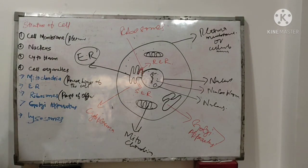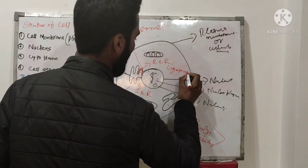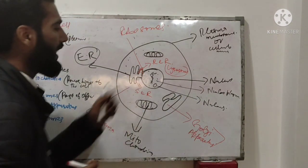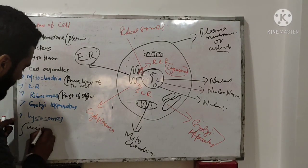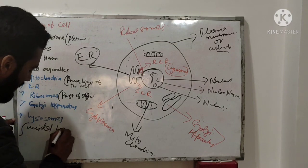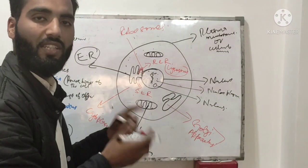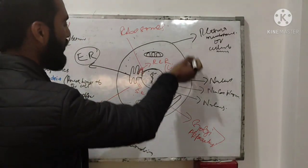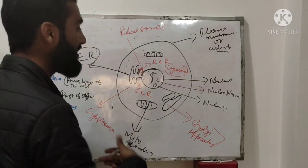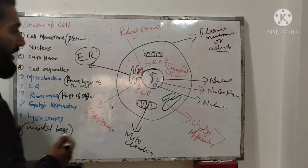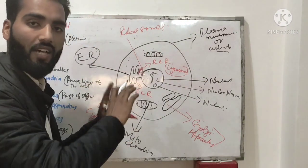Another cell organelle is lysosomes. Their other name is 'suicidal bags.' They are called suicidal bags because when a cell becomes dead, lysosomes engulf that dead cell and break it down — because if the dead cell remained, it could cause infection. So lysosomes engulf the dead cell, decay it, and destroy it.